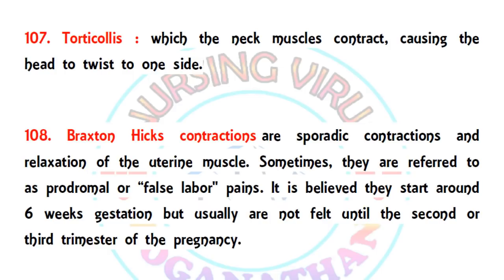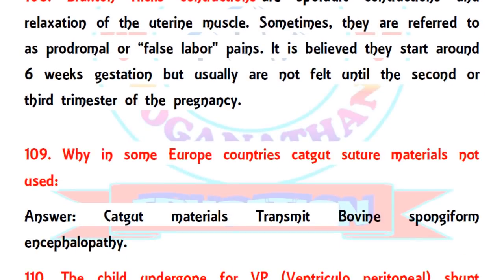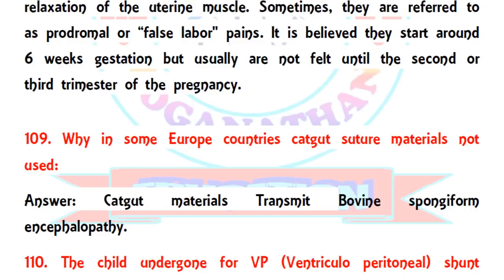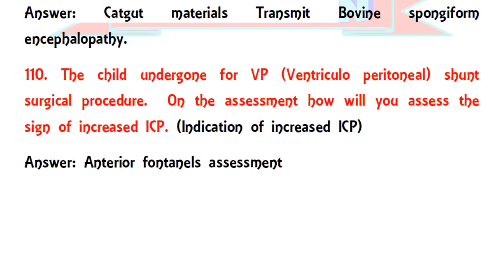Question 109: why do some European countries not use catgut suture materials? The correct answer is that catgut suture material transmits bovine spongiform encephalopathy. That is the reason many European countries do not use catgut suture.